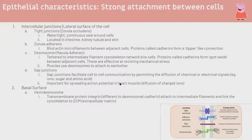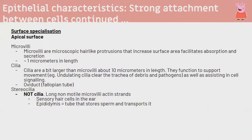The most high-yield junction to know is gap junctions, which facilitate passage of ions and small molecules between cells, enabling intracellular signalling. Epithelial cells have strong attachments and certain apical surface specializations to facilitate their function.